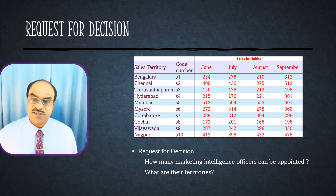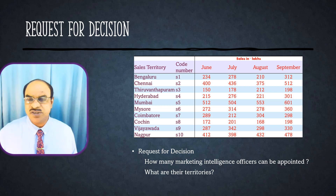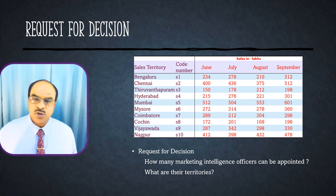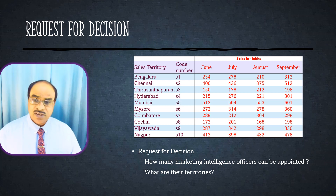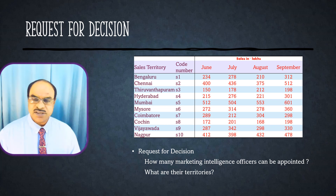You are heading the marketing intelligence department, and the CMO — the Chief Marketing Officer — is asking: we are having ten different sales territories, how many marketing intelligence officers can be appointed and what are their territories? We are having ten sales territories, but the CMO is clear that we cannot appoint a marketing intelligence team for all ten territories. We can appoint maximum three or four — that is the recommendation requested from the intelligence department.